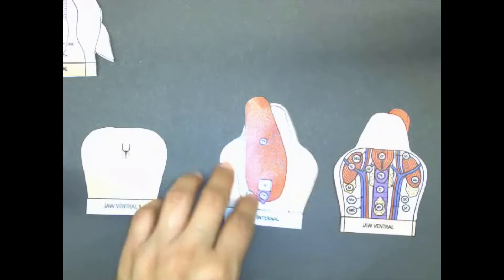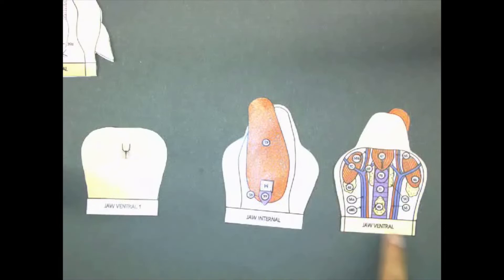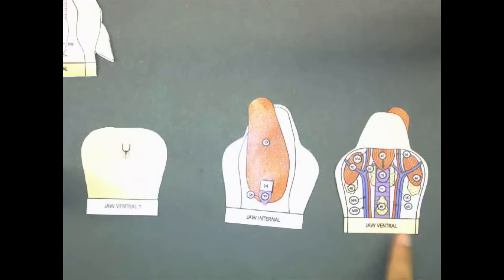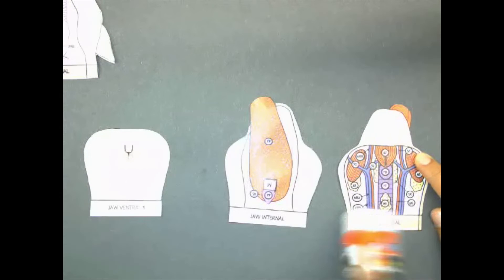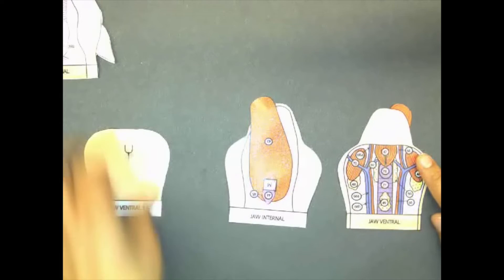To build the bottom of the head it's very similar to building the top of the head. You're going to place some glue where it says jaw ventral and you're going to place jaw ventral one on top.